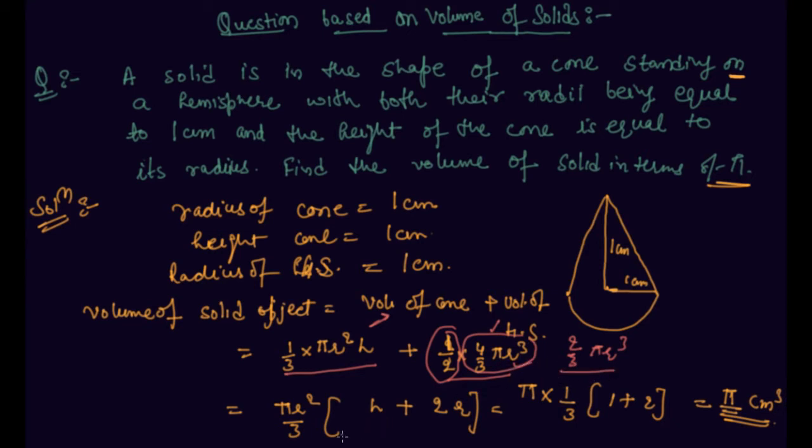So you can solve it. And after solving the question you are getting π cm³. So the volume of complete solid object is π cm³.